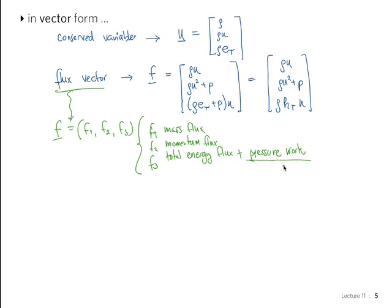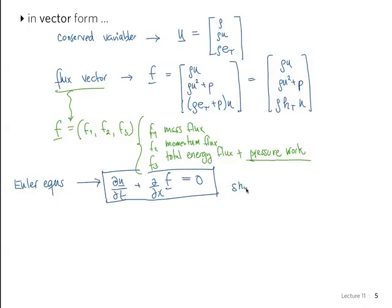Now, using this vector notation, then the Euler equations completely get written in a very convenient, as I said, it's called the short form. It's simply dU/dt, where U is now the whole vector, plus d/dx of the flux terms equal to zero. This is the whole 1D Euler equations now written in a short form, thanks to this vector notation.